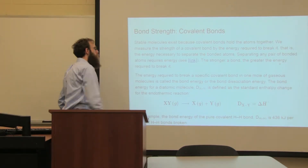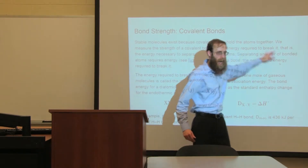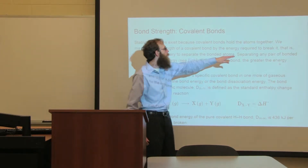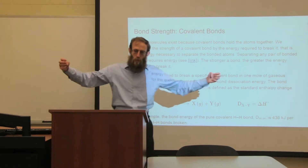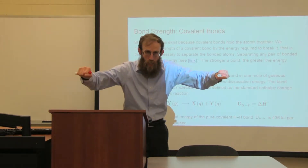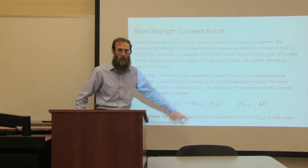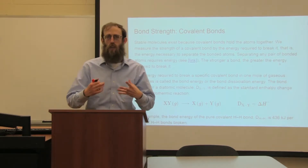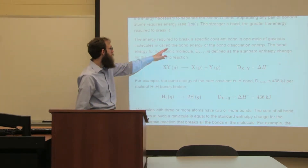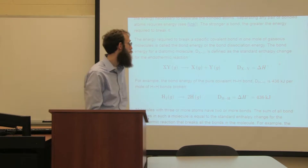Stable molecules exist because covalent bonds hold the atoms together into a little molecule. We measure the strength of this bond by the energy required to break it — to actually separate those two atoms. The stronger the bond, the greater the energy required to break it, and it always requires energy to break a bond. The amount of energy to break the bond is called the bond energy or the bond dissociation energy, because we're dissociating those atoms from one another.